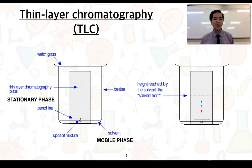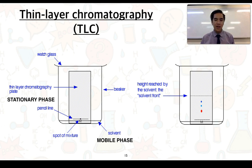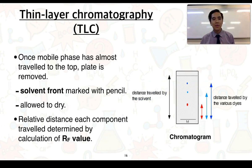Components of the mixture then separate to varying degrees. Their rate of movement is based on the strength of interactions they have with both the stationary phase (the TLC plate) and the mobile phase (the solvent). You can see in the diagram that the solvent has travelled approximately halfway up the TLC plate; the highest point the solvent reaches is called the solvent front. Once the mobile phase has almost reached the top, we remove the plate, mark the solvent front with a pencil, and allow it to dry. The solvent will eventually evaporate, so marking the solvent front is essential to know how far it actually reached.